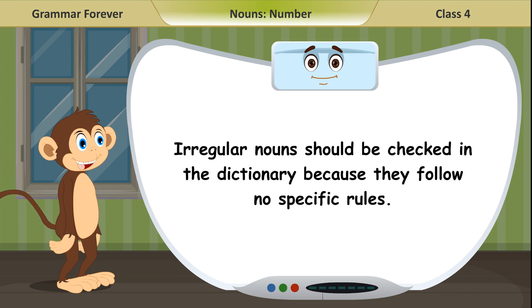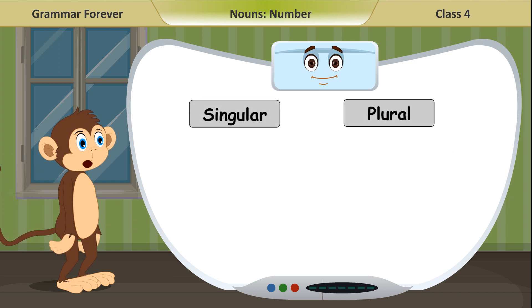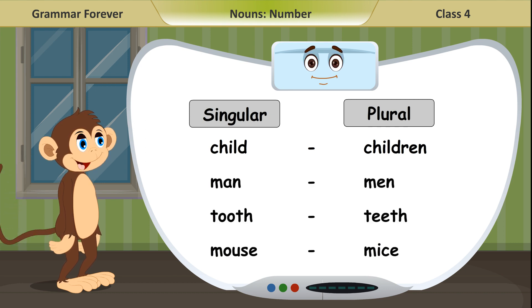Irregular nouns should be checked in the dictionary because they follow no specific rules. Singular, plural: Child, children. Man, men. Tooth, teeth. Mouse, mice.